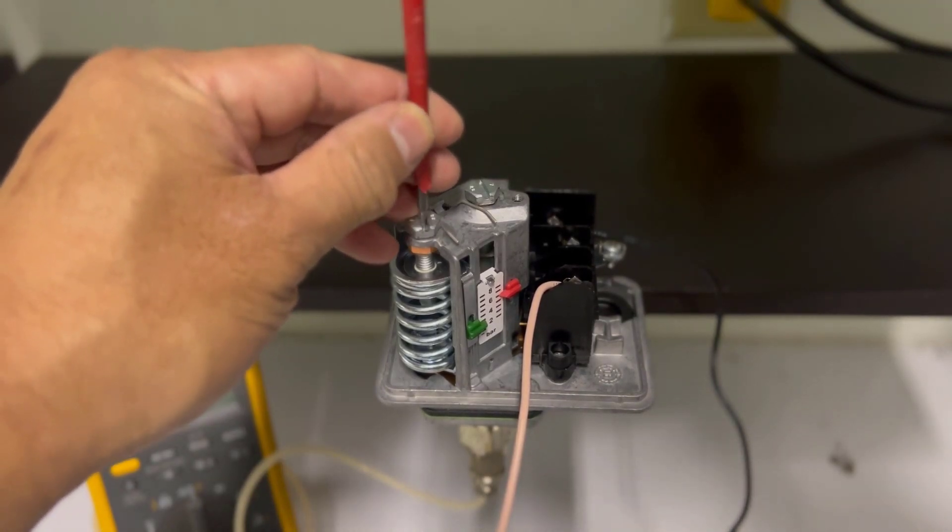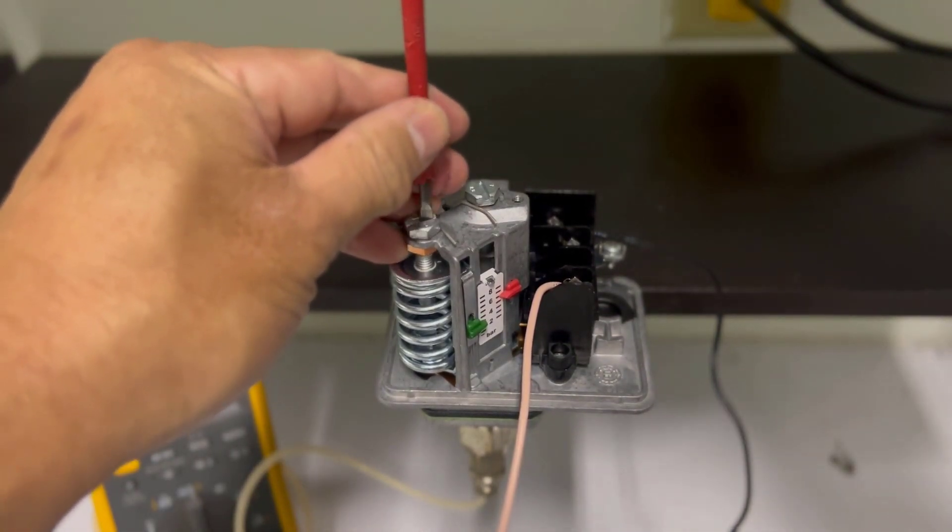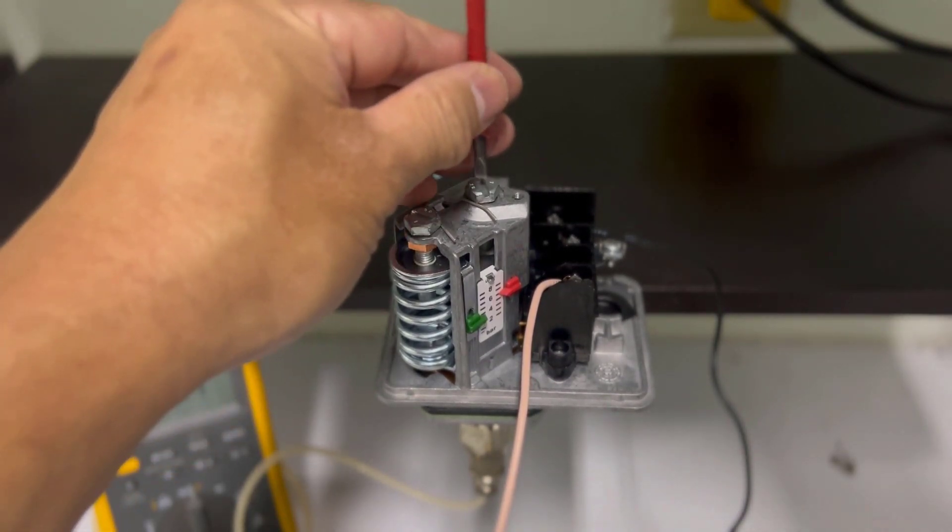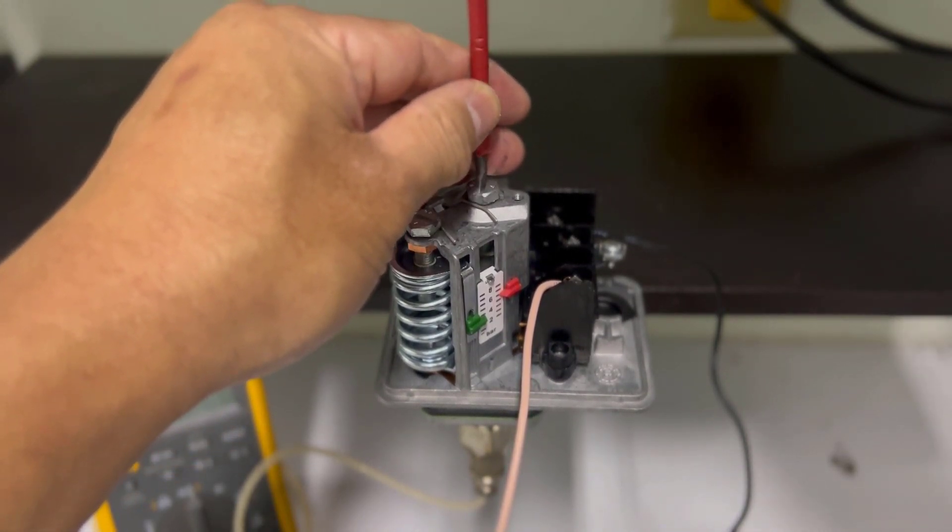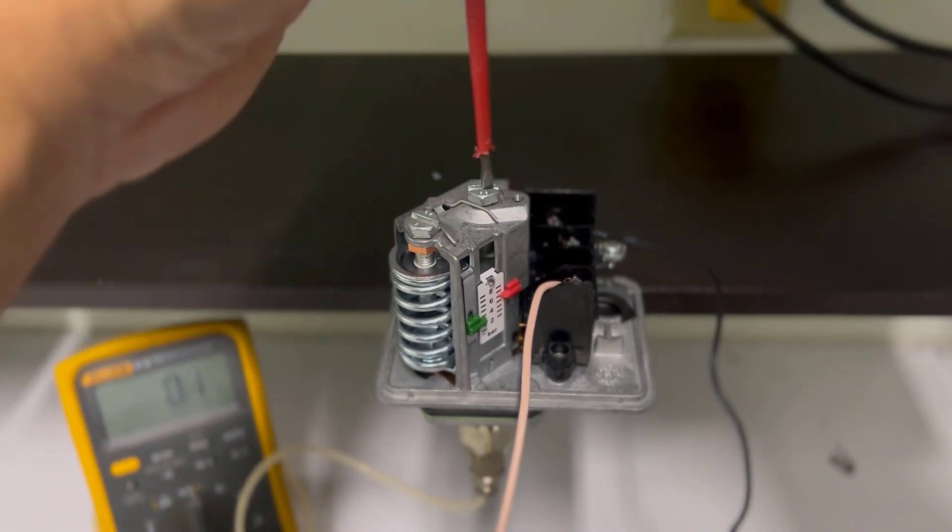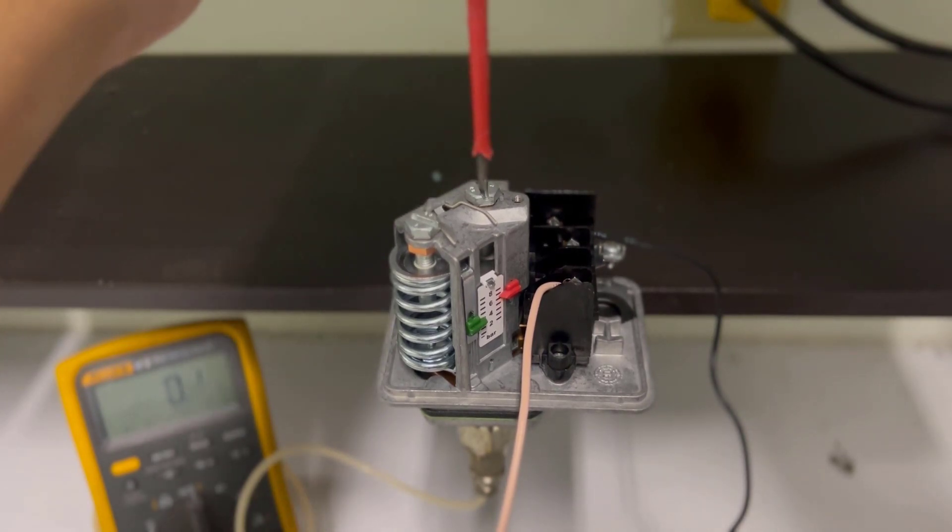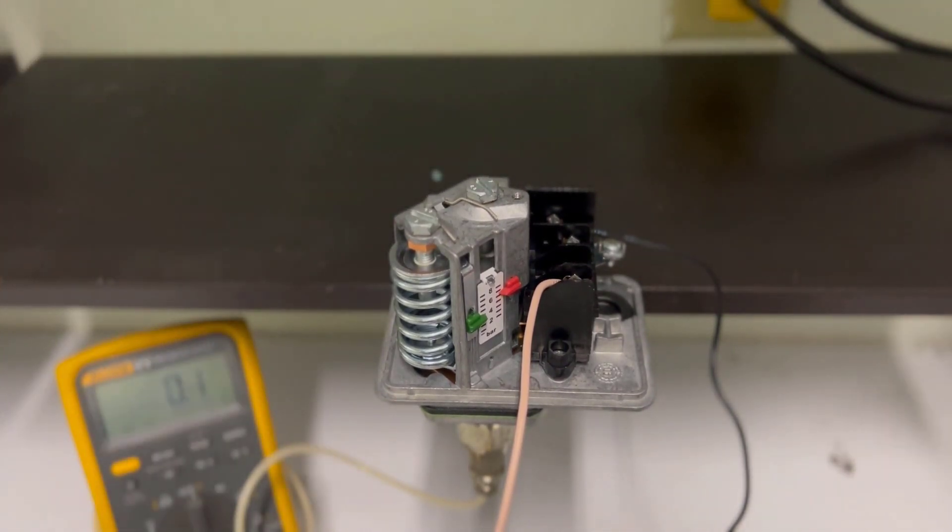The ideal cut-in and cut-out pressure settings for a jockey pump can vary depending on the specific fire protection system and its design. However, typical cut-in and cut-out pressure settings for a jockey pump in a fire sprinkler system are as follows.